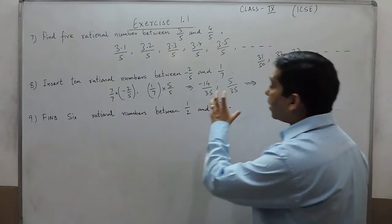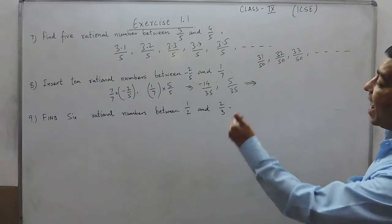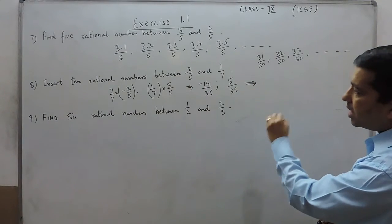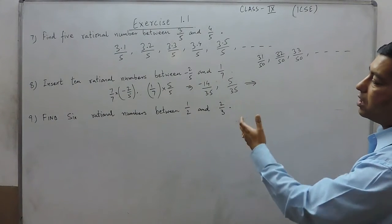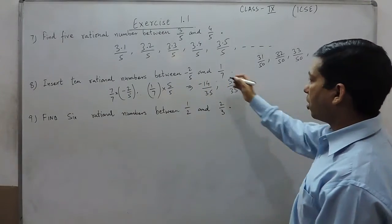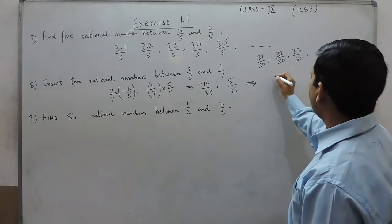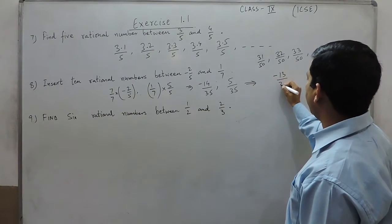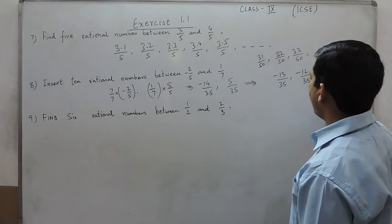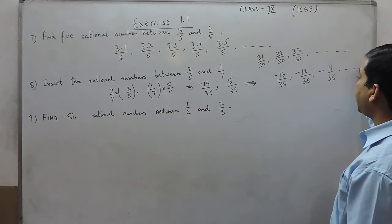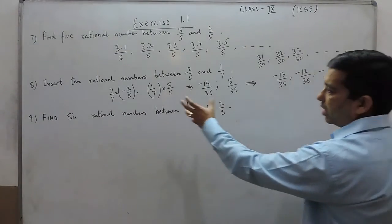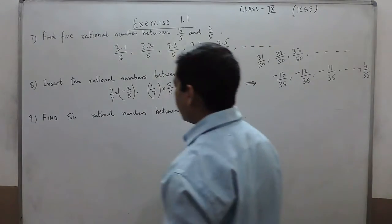Now all the numbers between -14 and 5 in the numerator with denominator 35 are rational numbers between these two fractions. So -13/35, -12/35, -11/35 and up to 4/35 — all these numbers lie between the two given rational numbers.